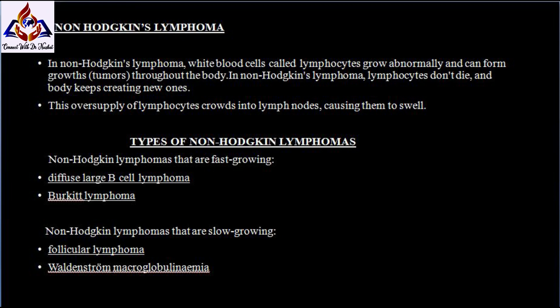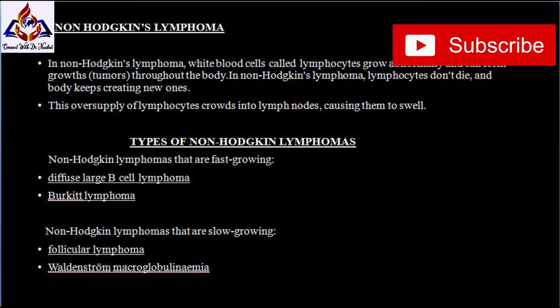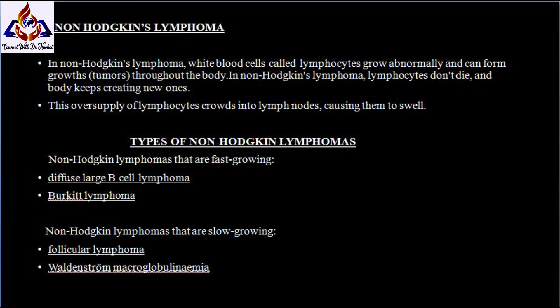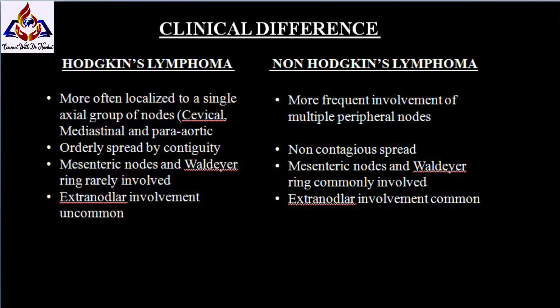There are two types of non-Hodgkin lymphomas: fast-growing and slow-growing. Fast-growing types are further divided into diffuse large B-cell lymphomas and Burkitt lymphomas. Slow-growing non-Hodgkin lymphomas are further divided into follicular lymphomas and Waldenström macroglobulinemia.